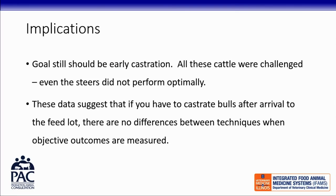I don't want anyone to walk away thinking we should wait until 500 kilos to castrate bulls — it's completely and utterly inappropriate. But in the U.S. industry, the reality is that many bulls make it to 300, 400, 500 kilos with testicles still intact, and they must be removed prior to slaughter to optimize value. We still need to advocate for early castration and work on producer education. These cattle were sick and didn't perform optimally — even the steers didn't grow the way we wanted — so there may be an ancillary drag from respiratory health preventing differences from being expressed.